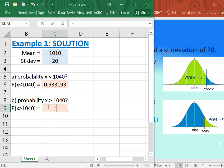I can just take one minus the 0.993 because that was the area to the left of 1040 and I just want the area to the right, so I just do one minus that.